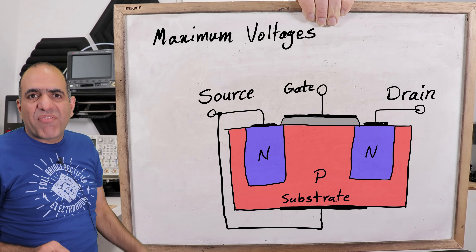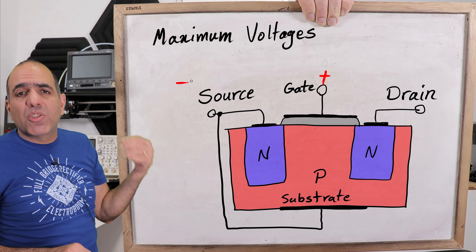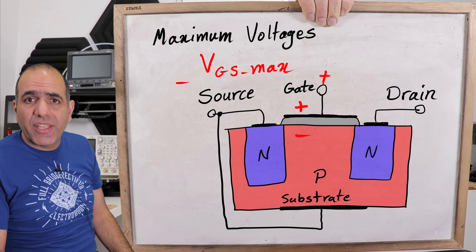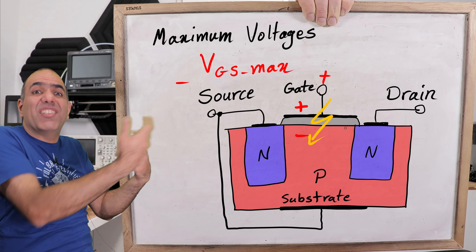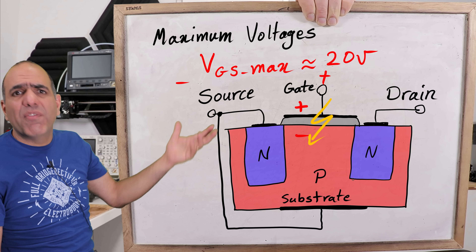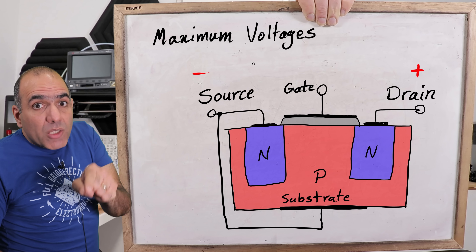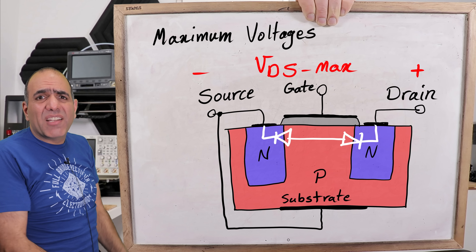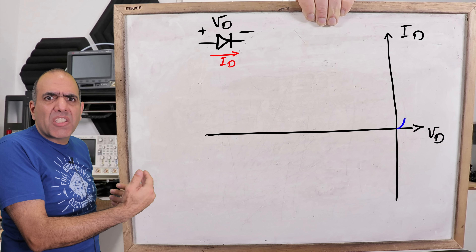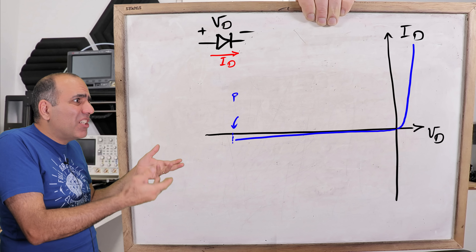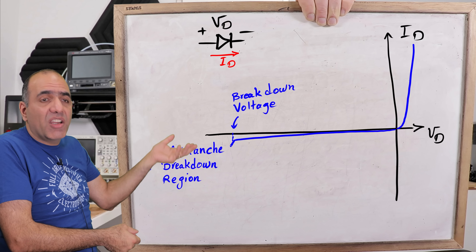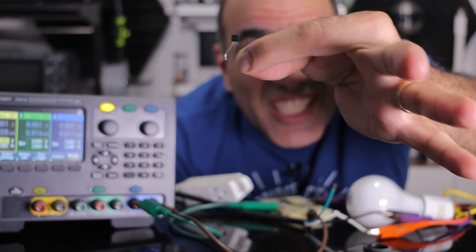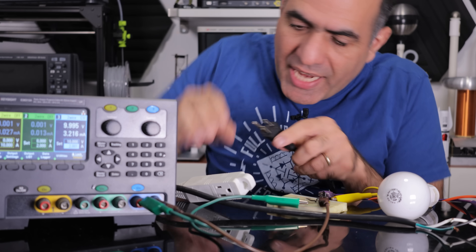MOSFETs have maximum voltage ratings. One is the gate-source max voltage — basically when overvoltage across the tiny gate capacitor's glass dielectric cracks and breaks it down, ruining the transistor. That's typically around 20 volts, but check the datasheet. There is also a max drain-source voltage. There are a bunch of PN diode junctions in there, and diodes can take only so much reverse voltage before they enter breakdown or avalanche region, conduct, heat up, and blow up. Different MOSFETs have different voltage ratings, so we pick one that can do 500 volts and supply 10 volts to the gate to turn it on.